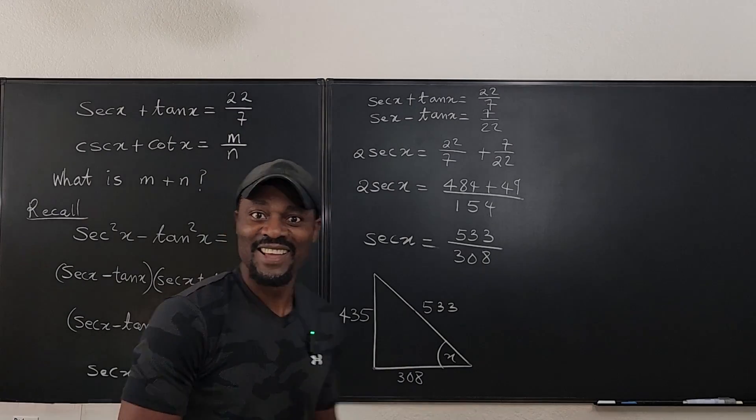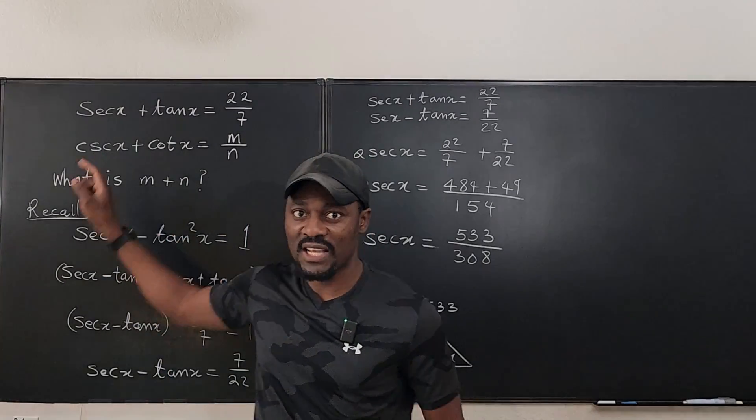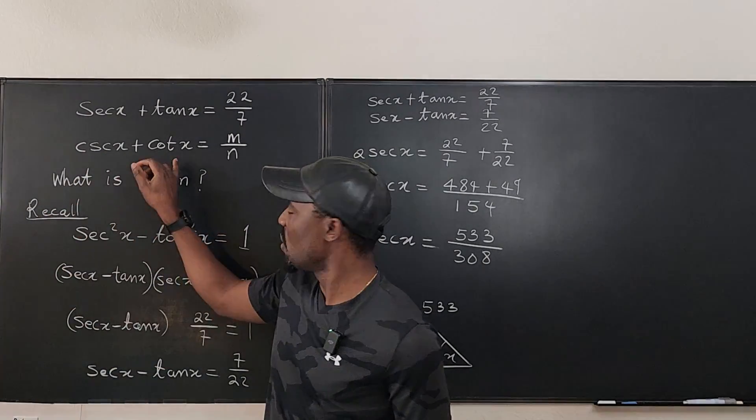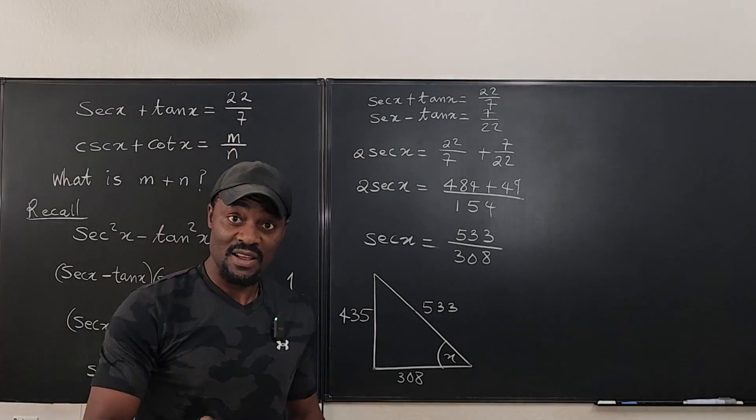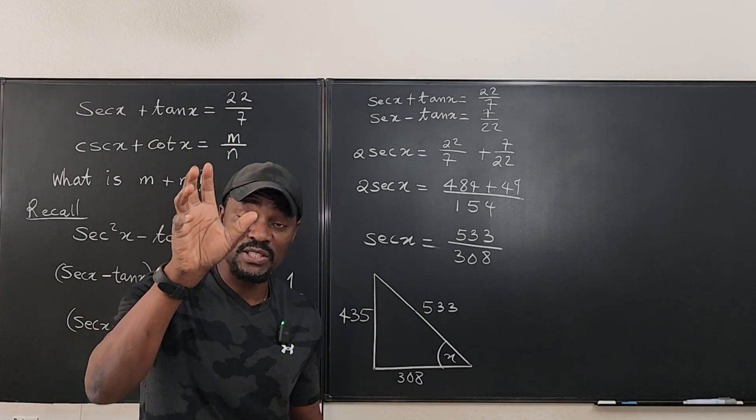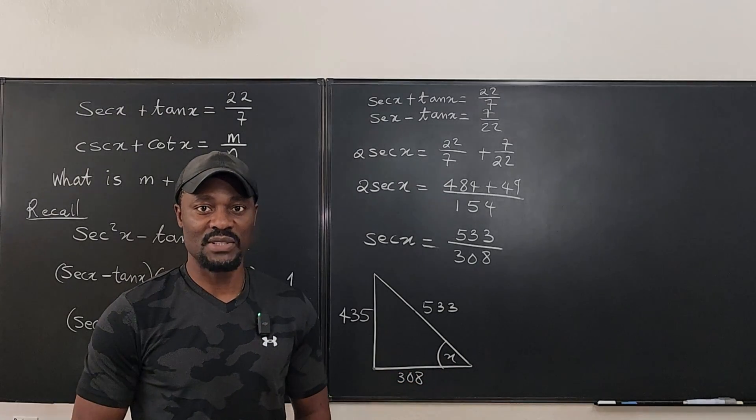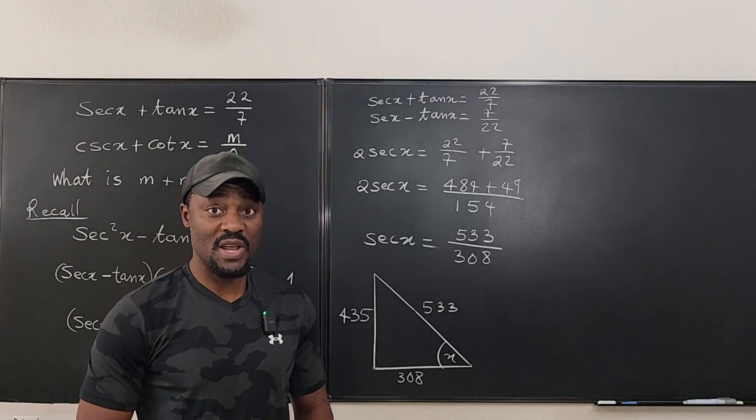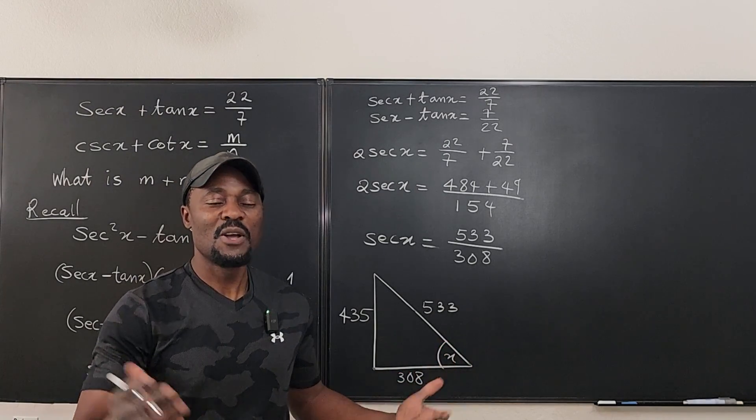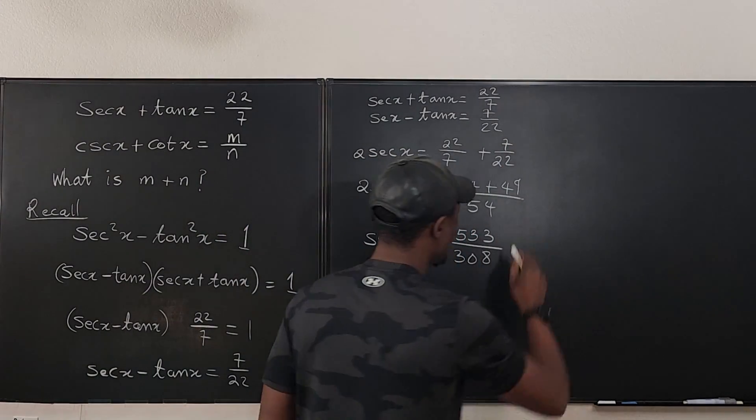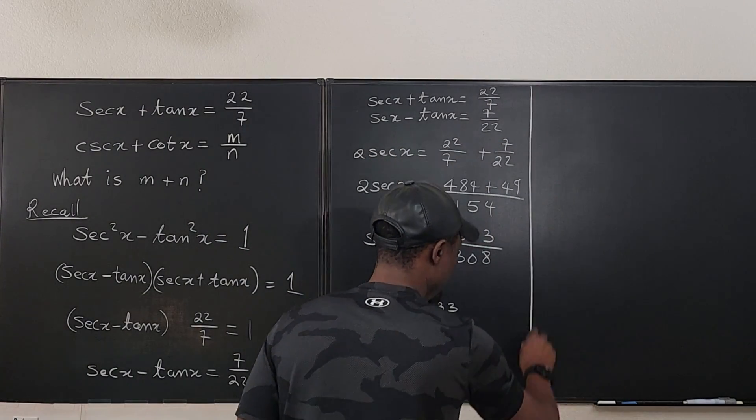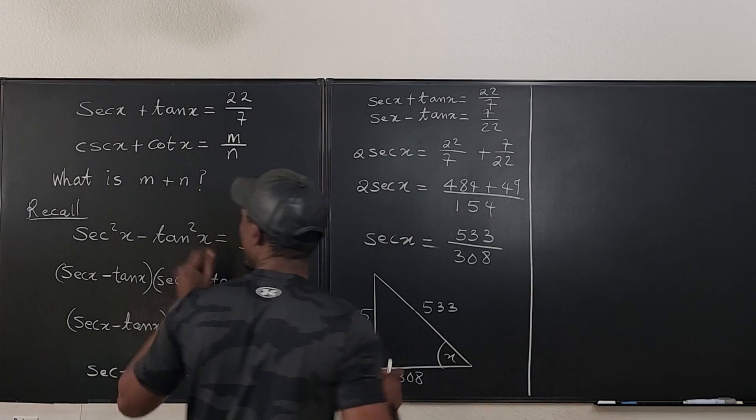And once you have this, you can find cosecant x from the triangle. You can find cotangent x from the triangle. By the time you add them together, you're going to get a ratio. And that ratio is m over n. And you can add m plus n together. See, this is where I should say, do it yourself. But let me just do it. Because I'm a good guy. So at this point, let's go here.